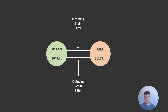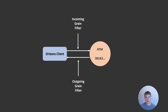Additionally, it doesn't have to be just on grain-to-grain calls. We can also make these calls when using an Orleans client, like we have in our application where we call an Orleans silo directly from ASP.NET using the Orleans client. So let's talk a bit about how we actually add these grain call filters, how we register them, how many we can use, and what order they execute in.